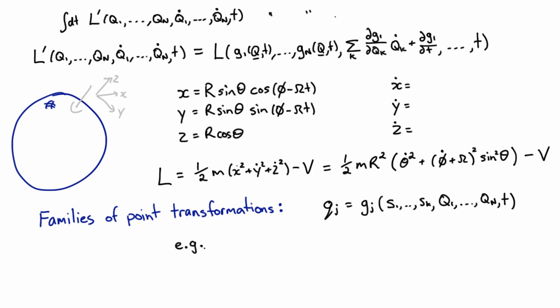One very simple example might be a translation. In one dimension you might have a coordinate Q, and your big Q might just be a translated part of that. And the amount that you translate could be a function of S. So if I translate S equals zero, I've made the identity transformation. If I translate one meter, then I moved all my coordinates one meter over.